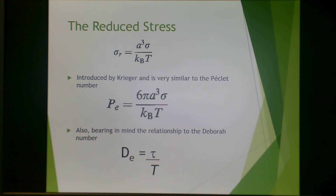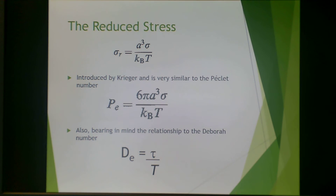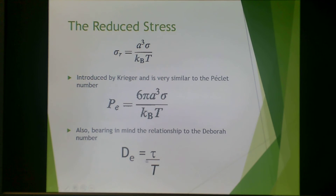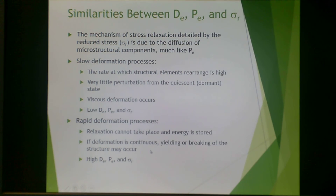Reduced stress is another term similar to the Péclet number and the Deborah number, introduced by Krieger. It uses similar terms to the Péclet number and has a similar relationship to the Deborah number, with certain terms analogous to tau.